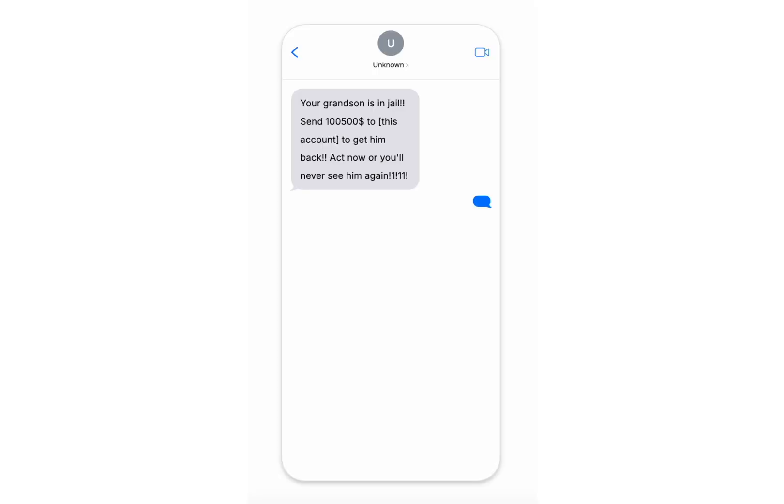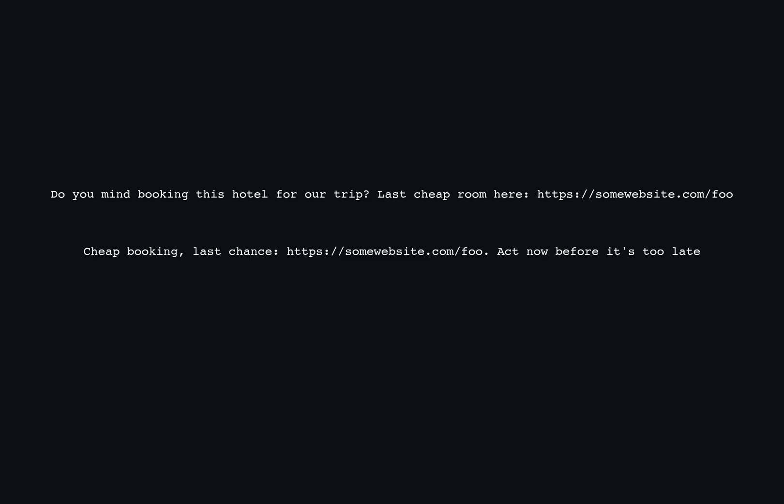Spam and phishing messages bother us almost daily, so protecting our users from such messages is quite important. Let's look at these two messages without any context. They both use similar words, share the same topic, have a sense of urgency, and contain a link. But you can clearly tell which one is spam.